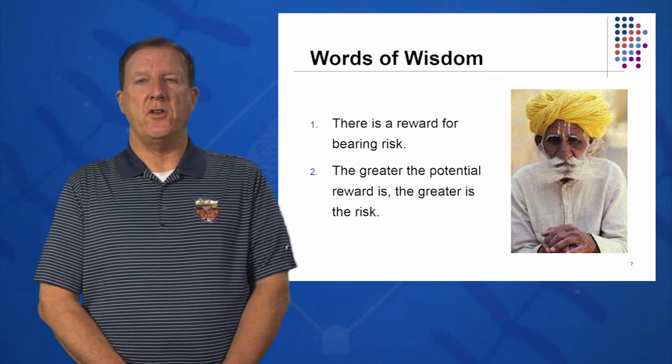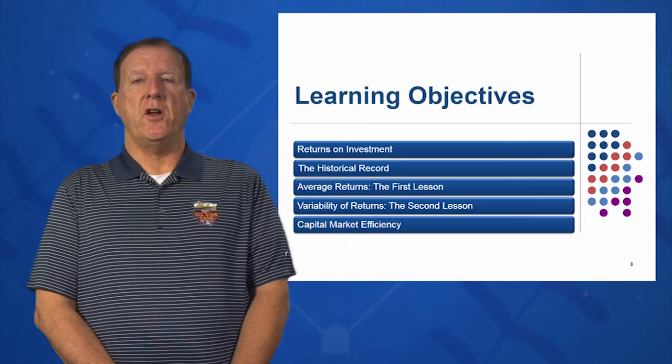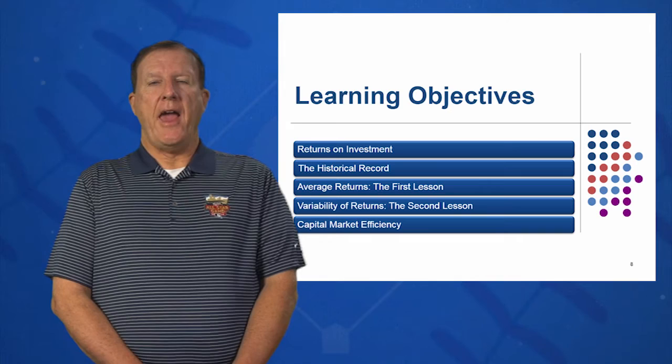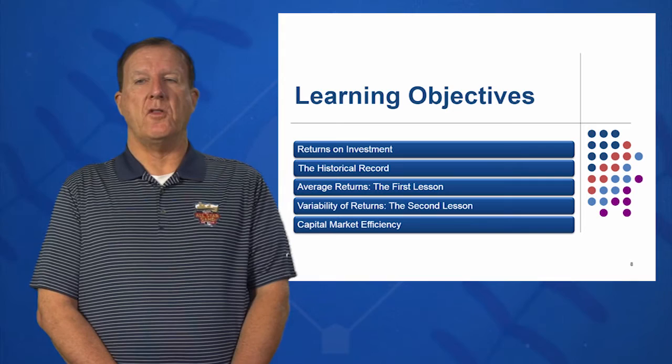We have five learning objectives in this session. First, we're going to look at returns on investment — what has happened in history over the last 85 to 90 years for stocks and bonds, interest rates and inflation, and T-bills. What are the average returns on small company stocks, large company stocks, bonds, inflation, and T-bills?